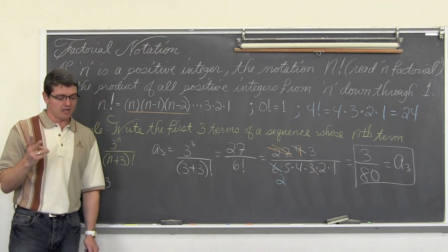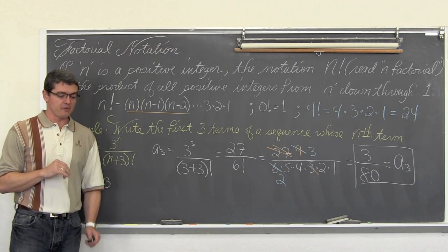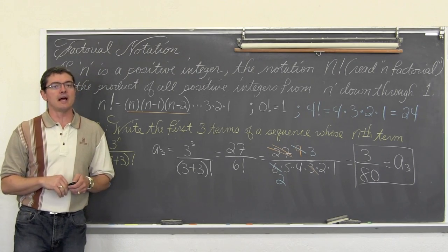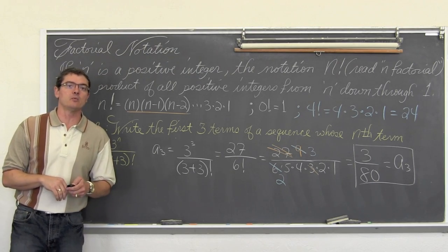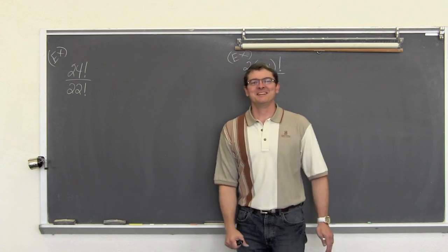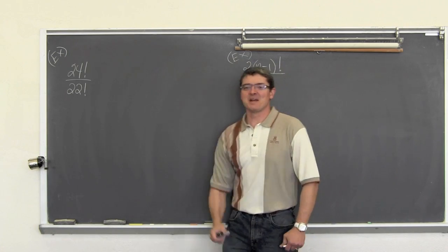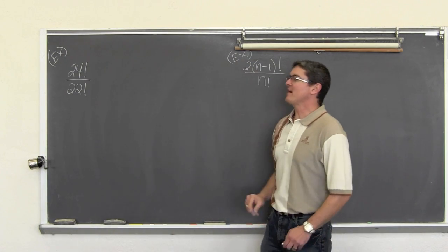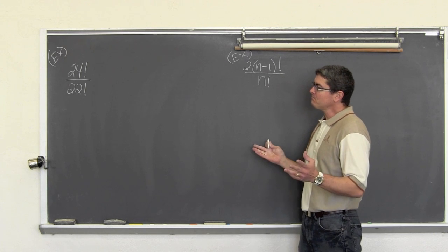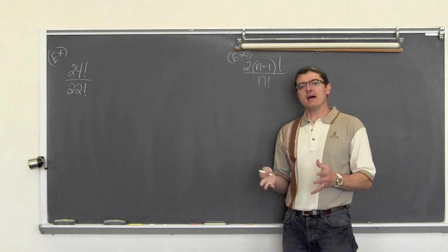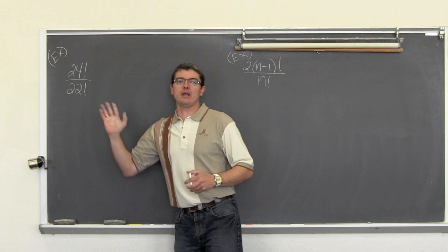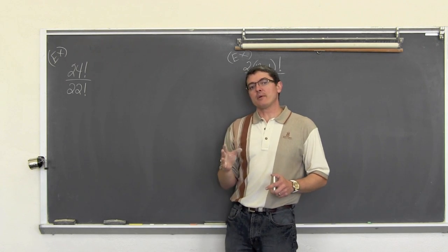We are going to do two more examples of reducing fractions with factorials and do one last example dealing with factorials. Next example: twenty-four factorial over twenty-two factorial, or n plus three factorial.